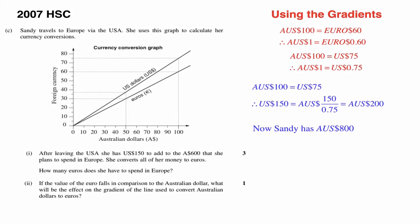That means if we want to convert 150 US dollars to Australian dollars, we would have to divide by 0.75, meaning that 150 US dollars is the equivalent of 200 Australian dollars. So that tells us that Sandy now has a total of 800 Australian dollars that she now wants to convert to Euros.